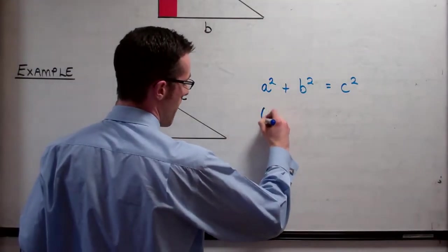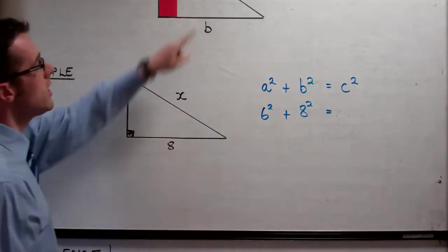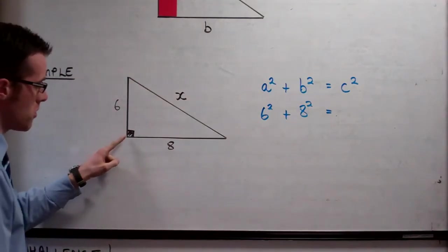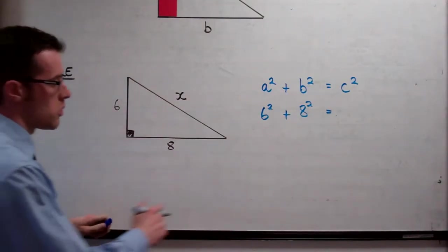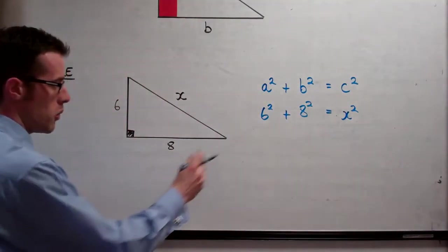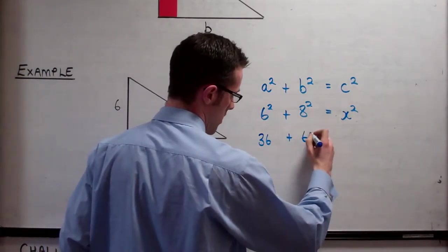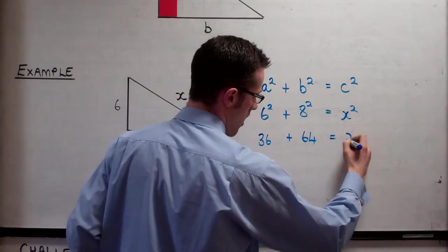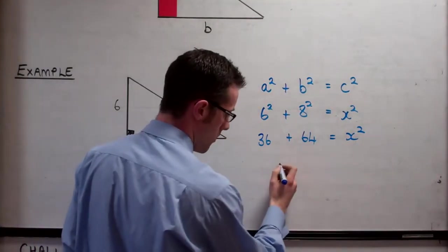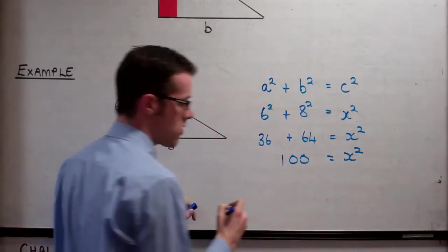So if we do that, 6 squared plus 8 squared is equal to... Now it's not called c in this case, it's called x, but we can still tell that it's the hypotenuse because it's across from the right angle here. So we're going to call that x squared. And if we square 6, we get 36. Square 8, and we get 64. And that's equal to x squared. And if we add these two together, we can find that 100 equals x squared.